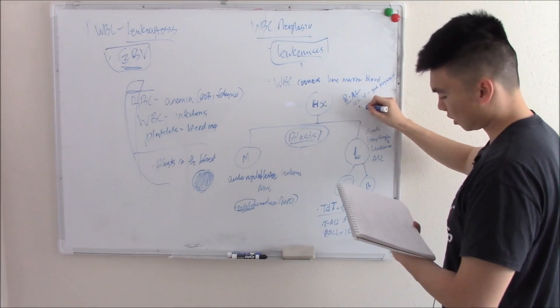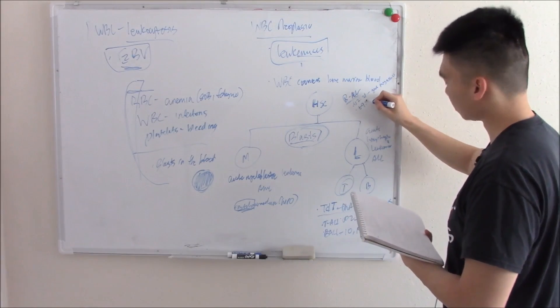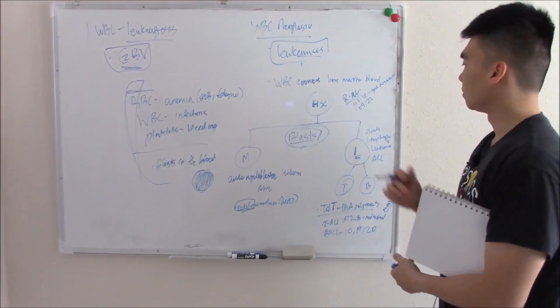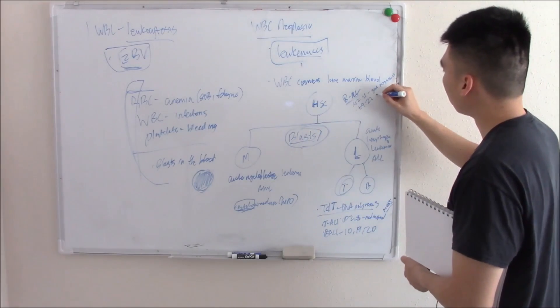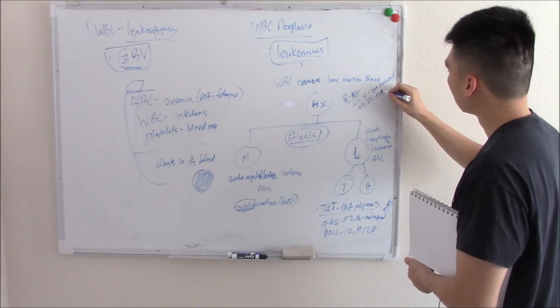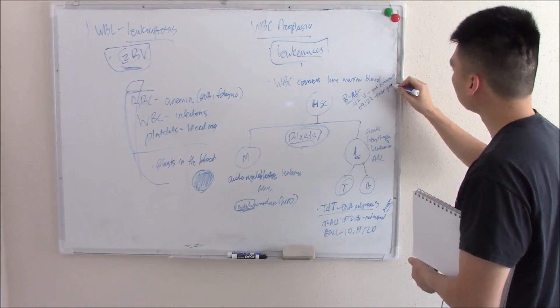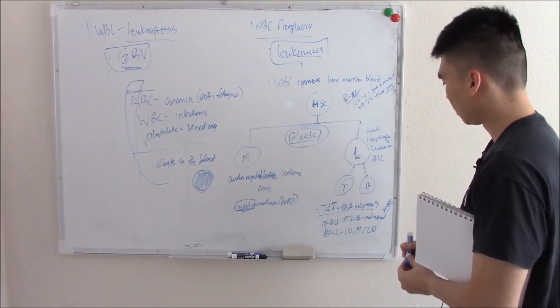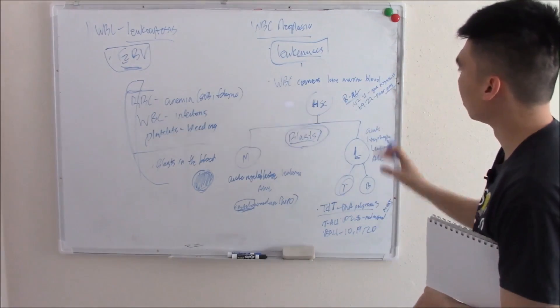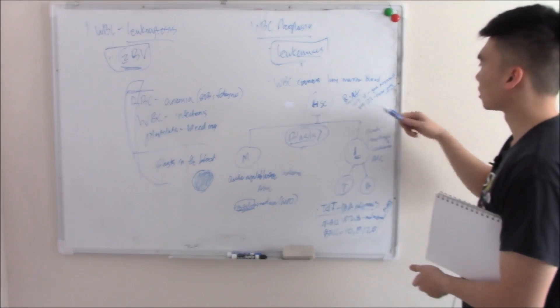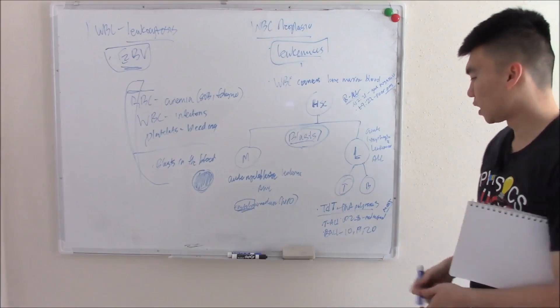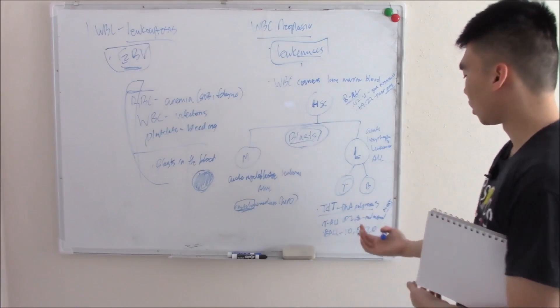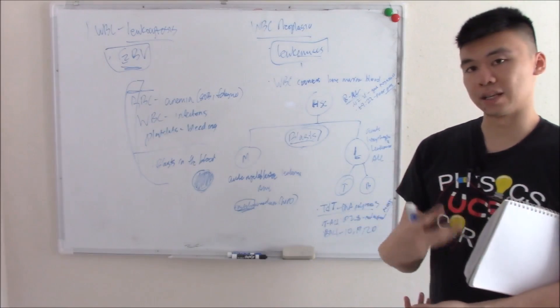However, there's another translocation of chromosome 9 and 22, better known as Philadelphia chromosome. We'll talk about that in another video, but that is a poor prognosis. For B-ALL, know good prognosis versus poor prognosis, and know the markers 10, 19, 20. For T-ALL, know the markers and that it presents as a mediastinal mass.